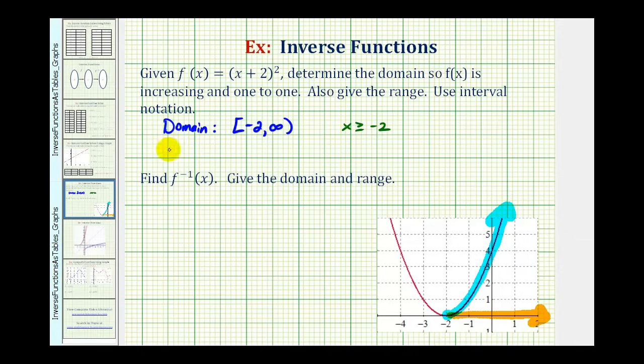Now let's consider the range. The range is a set of all possible y values or outputs of this function on the restricted domain. Well if we project this graph onto the y axis, notice how the smallest y value would be zero and from there it increases upward toward positive infinity. So the range would be the interval from zero to infinity closed on zero meaning it includes zero or we could say y is greater than or equal to zero.